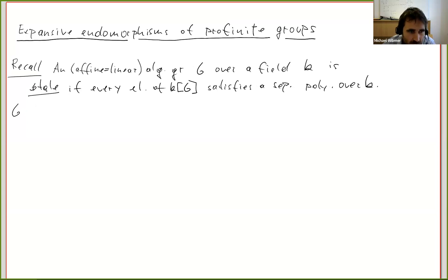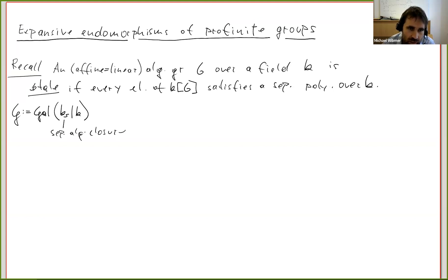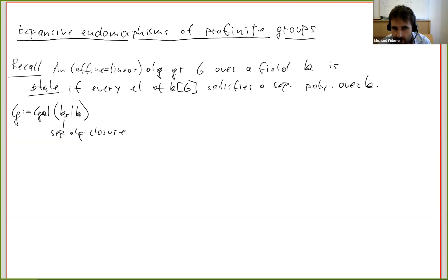Let me denote with curly-G the absolute Galois group of k. You take the separable algebraic closure — K_s is the so-called separable algebraic closure; in characteristic zero, that's just the usual algebraic closure. This is a group but also naturally a topological group, and in fact it's a profinite group — the projective limit of all finite Galois groups over k. This is the absolute Galois group of k, and it acts continuously.